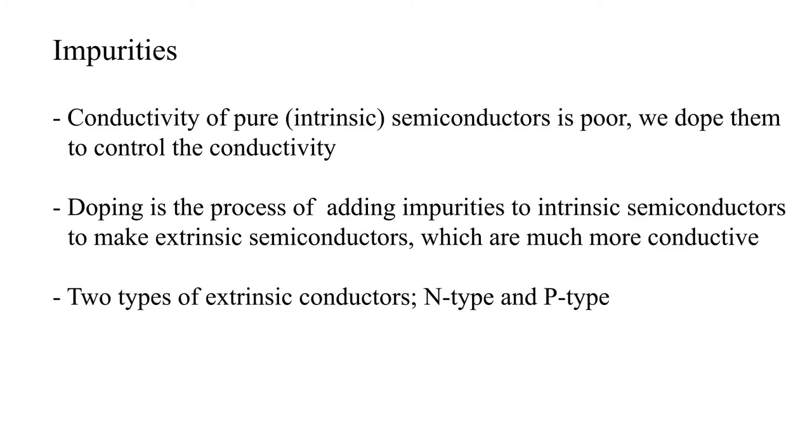The conductivity of pure or intrinsic semiconductors is very poor. However, in order to improve their conductivity, they are doped. Doping is the process of adding impurities to intrinsic semiconductors to make extrinsic semiconductors, which are much more conductive.